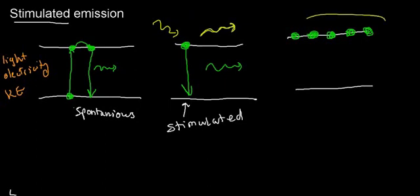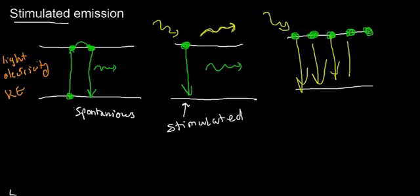Ideally, we would have a situation where all I need to do is give one nudge, and then all these excited electrons drop down and emit photons. This is ideally what we want. Being that we know what we need for laser light, we're going to talk about population inversion.